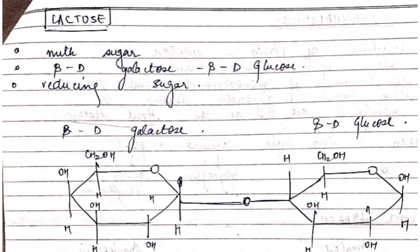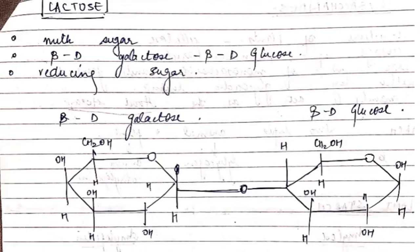Next is lactose, a milk sugar formed from beta-D-galactose and beta-D-glucose. It also forms a reducing sugar with the loss of a water molecule. Basically, disaccharides form glycosidic linkages — that is very important. I hope these notes are useful for you.